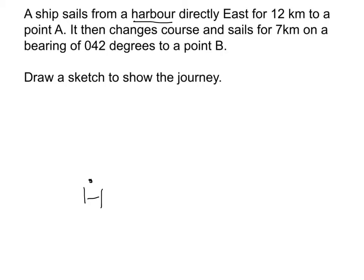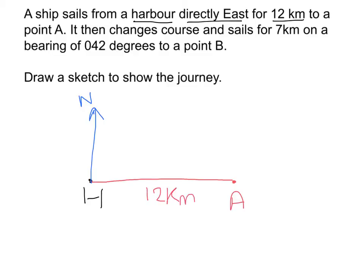The ship goes directly east for 12 kilometres to a point A. We always assume that straight up the page is north, so directly east is 90 degrees from that — straight across. We're just doing a sketch so we don't need to measure anything or draw to scale. We mark roughly where A is, label the distance as 12 kilometres, and note it was directly east — so there's a right angle there.